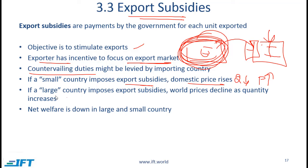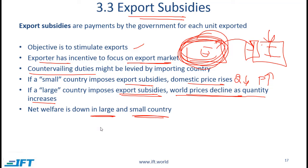If a large country imposes export subsidies, world prices decline as quantity increases. The benefit of the subsidy is partially transferred to the importing country. Net welfare decreases in both cases, but decreases more for a large country because some benefit is transferred to the trading partner.